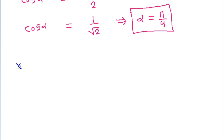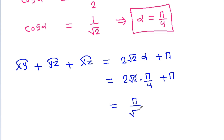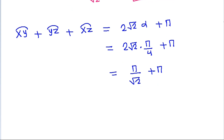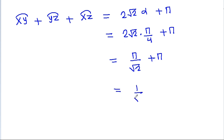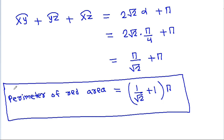And we have arc xy plus arc yg plus arc xg equal to 2 root 2 times alpha plus pi. That is 2 root 2 times (pi over 4) plus pi, which is pi over root 2 plus pi. So the perimeter of the red area is (1 over root 2 plus 1) times pi. Thank you.